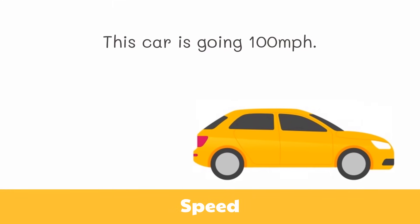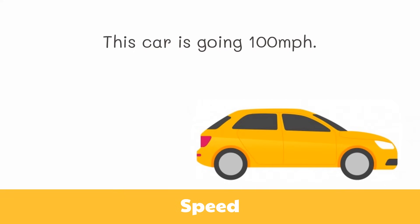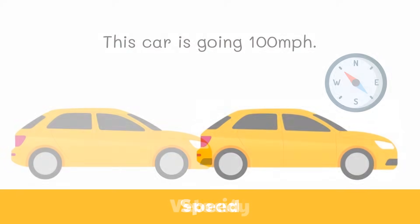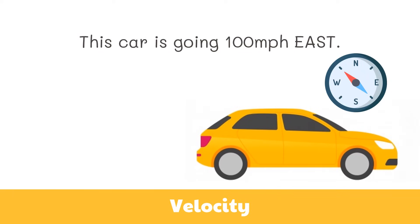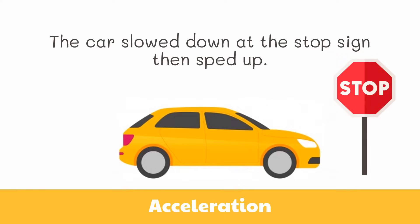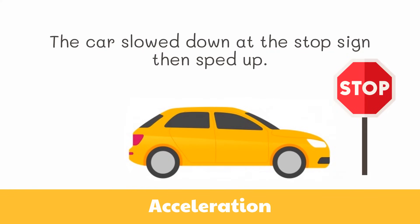This car is going 100 miles per hour — this is speed, because it is only telling how fast the car is going. This car is going 100 miles per hour east — this is velocity, because it is telling the speed and direction the car is going. The car slowed down at the stop sign then sped up — this is acceleration, because the car changed its speed.